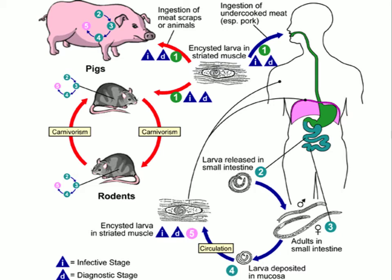One unusual thing is that these worms lay live larvae, whereas most other worms lay eggs which then hatch into larvae — not here with Trichinella. The adult stage is very short-lived, and then the whole process repeats. That is Trichinella spiralis.